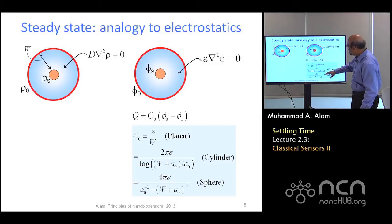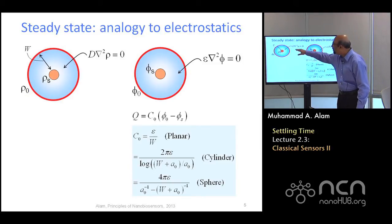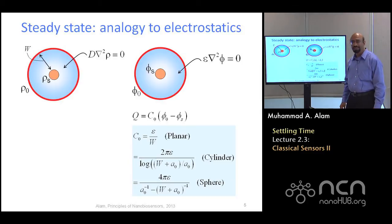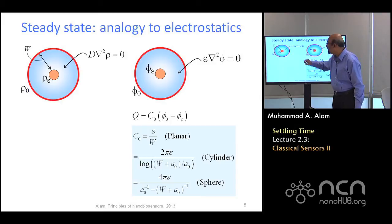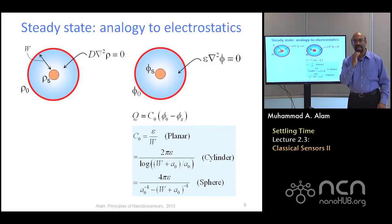Now, you see immediately that once you know this solution, you should be able to say what the solution of this equation, the diffusion problem is, steady state diffusion problem. Because rho, if you replace phi by rho and epsilon by D, then these two problems are exactly the same.